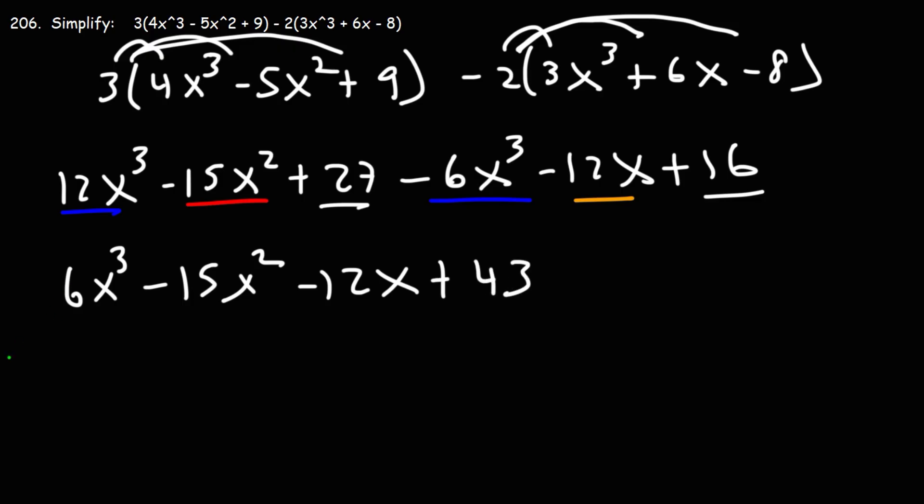And so this is the final answer: 6x cubed minus 15x squared minus 12x plus 43.